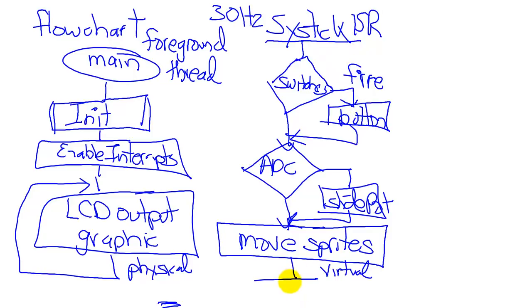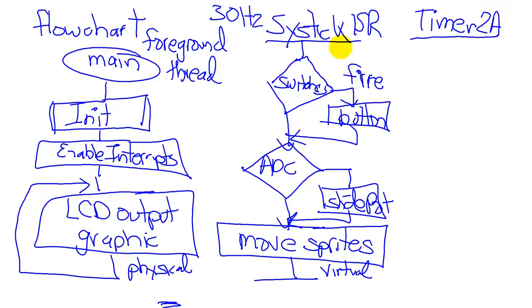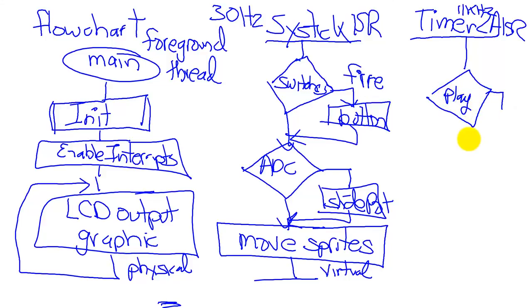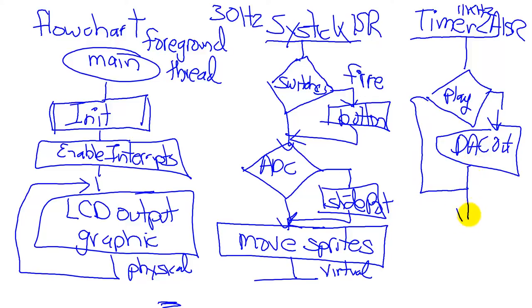The flowchart of the SysTick interrupt service routine follows the classic pattern where arrows only go down. This keeps the execution time short and bounded. One reason we have threads is to separate individual software processes. The sound thread is separated from the game thread using two interrupt service routines. The sound ISR runs much faster — at 11 kHz.